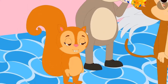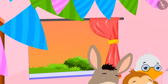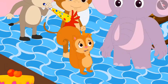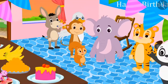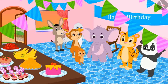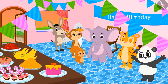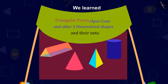Chanda is now roaming around in the party, looking at other shapes and thinking about how to make the shapes of their net. You should also look at the shapes of the objects around you and try to make the shape of their net. Kids, in this lesson, we have learned about triangular prism, open cone, and other three-dimensional shapes and their nets.